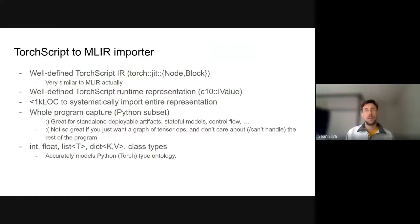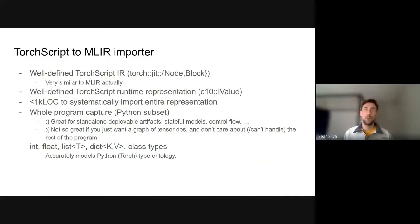One cool last thing: the way we write our TorchScript-to-MLIR importer is really interesting. TorchScript has a really well-defined IR and runtime representation, and it only takes about a thousand lines of code to import the entire representation. For context, there are thousands of ops — actually an open-ended set of ops — involved here. But since we're able to systematically model things in a way that exactly matches PyTorch semantics, we can do that. It's also really great with TorchScript because we can generate standalone deployable artifacts, stateful models, and control flow — things very relevant for edge deployments.